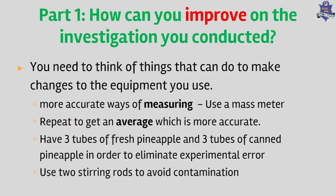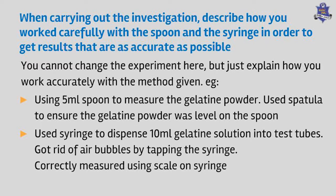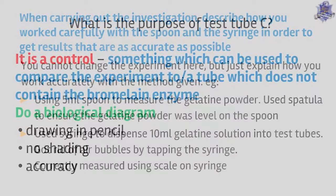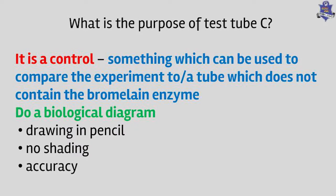The next point asks you to describe how you worked carefully with the spoon and syringe to get accurate results — you cannot change the experiment, so describe what you actually did. For the gelatine powder, use the 5 ml spoon and measure it out carefully, then use the spatula to level the gelatine. Use a 10 ml syringe to dispense the gelatine into the test tubes; get rid of air bubbles by tapping the syringe and use the scale on the side to measure accurately. Test tube C was your control — gelatine only — and you use it to compare the degree of gelatinization with your two experimental test tubes.